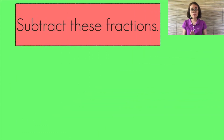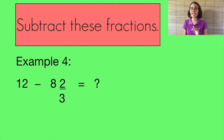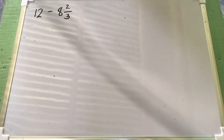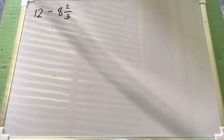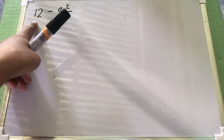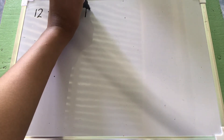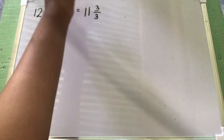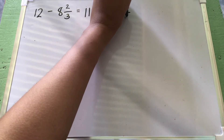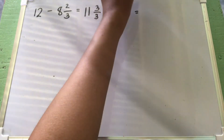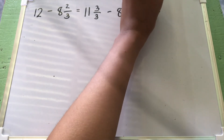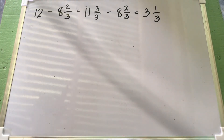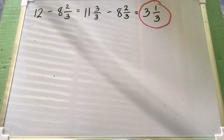Another example: whole number minus mixed number. Let's have 12 minus 8 and 2 thirds. Since 12 is a whole number, we subtract 1 from it to make it 11, and that 1 becomes 3 over 3. So we now have 11 and 3 thirds minus 8 and 2 thirds. 11 minus 8 equals 3, and 3 minus 2 equals 1 over 3. The final answer is 3 and 1 third.